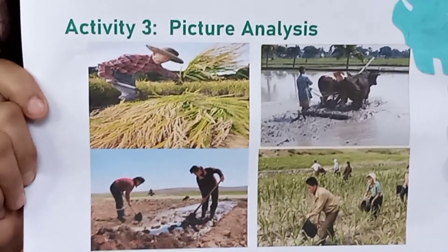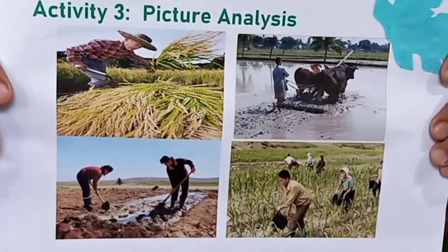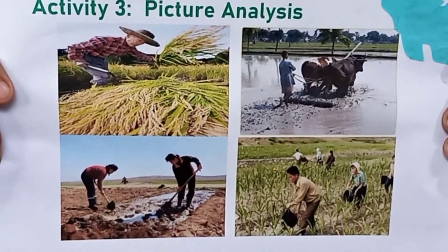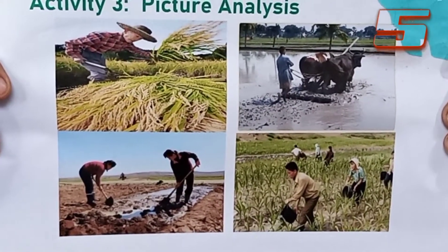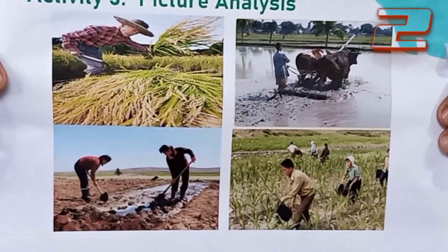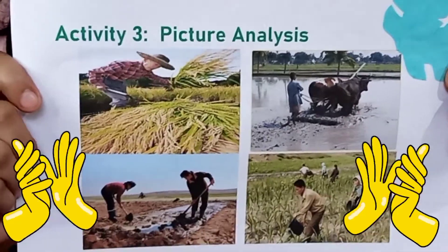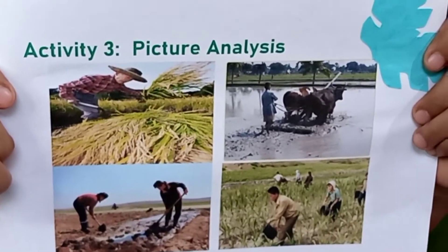Now let us proceed to our activity number three, feature analysis. You can get a piece of paper and write your answer. What can you say about the feature? Great answer. In the features, the farmers are using different tools and equipment to make their work easier.